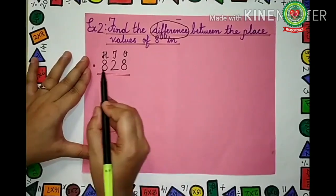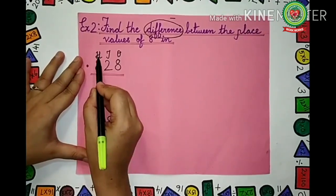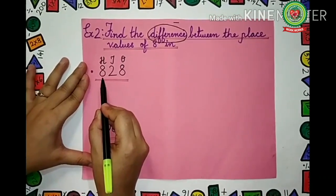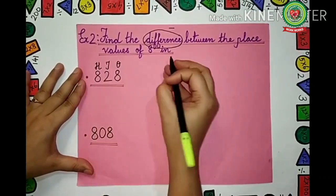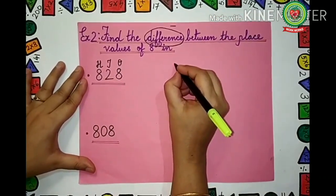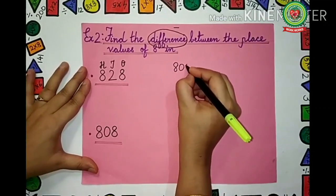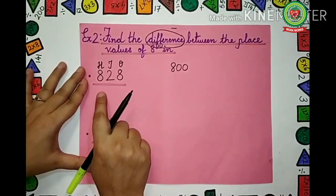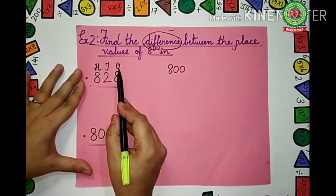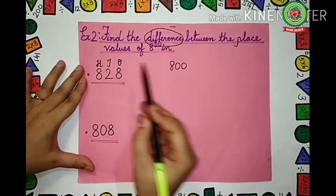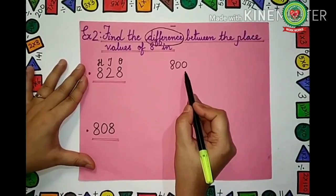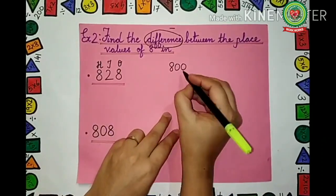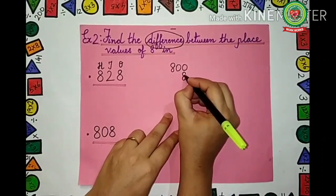Now where is 8? 8 is under 100's. We will take the bigger number first. 8 is under 100's, so 100 means two zeros — we will write down 800. Next, 8 is under 1's, so we will write 8 in the 1's place. 1's place means no zeros, so we write just 8.